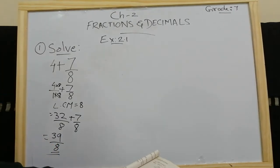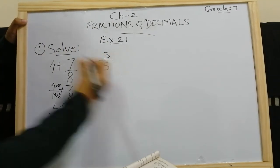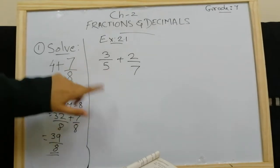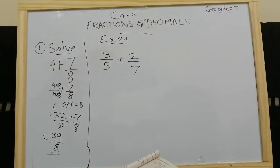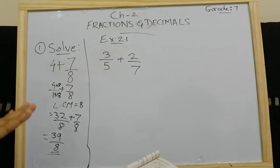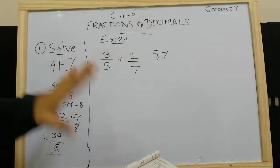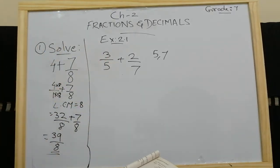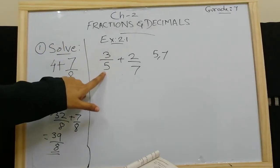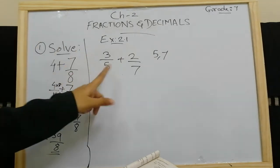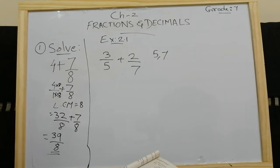The third question is 3 by 5 plus 2 by 7. Here you can see 5 and 7 are the denominators — they are two different numbers, so you cannot add them directly. Denominators have to be the same in case of addition and subtraction. We have to take the LCM of 5 and 7. One shortcut: check if 5 is in 7's table — no. Check if 7 is in 5's table — no. In that case, you can just multiply 7 and 5: 7 fives are 35. So 35 will be your LCM.